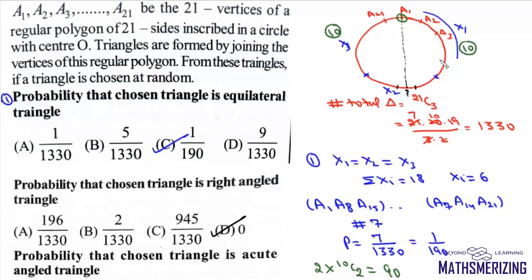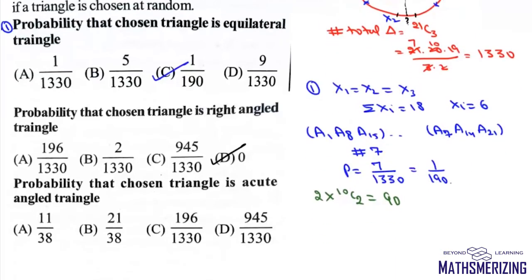Now we have 21 such vertices. So total number of obtuse-angled triangles that can be formed will be 21 into 90 divided by 2. Why divided by 2? Because if we have one case where we have suppose a1, a2 and a7, then if we consider a7,